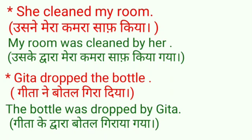See the image — how do we change it. B form is 'was' or 'were'. Subject becomes object and object becomes subject. What is our object? 'My room' — singular, so we use 'was'. The third form of 'clean' is also 'cleaned'.